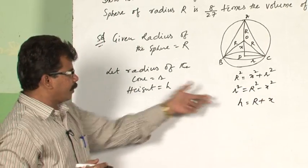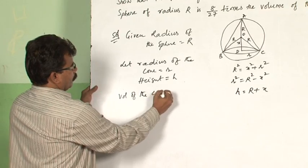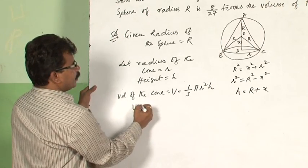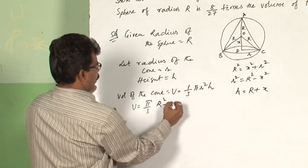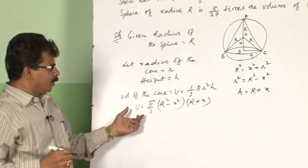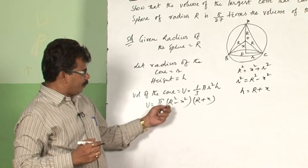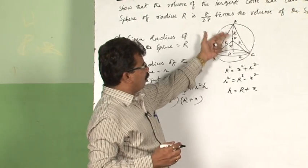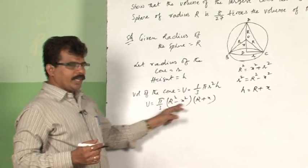These two measurements will be used to find the volume of the cone. Therefore, volume of the cone V is equal to the formula 1 by 3 pi r squared h. This can be written as V equals pi by 3 times (R squared minus x squared) times (R plus x). That means we have written volume in terms of the variable x. Note that R is not a variable here — R is the radius of the sphere, already given and fixed, so it works as a constant. The variable is only x.